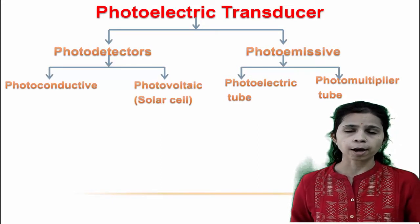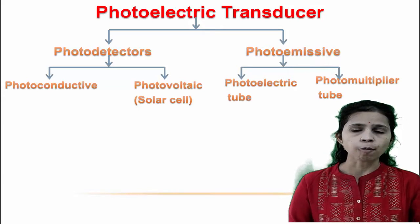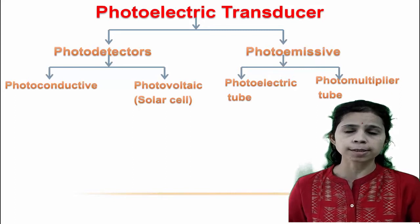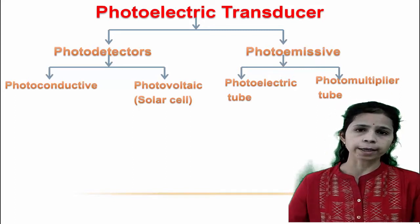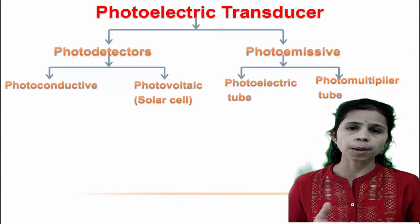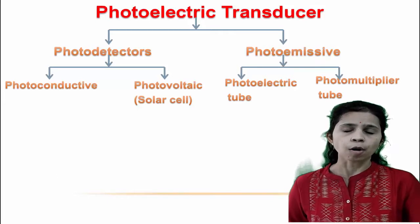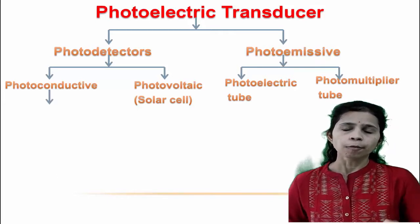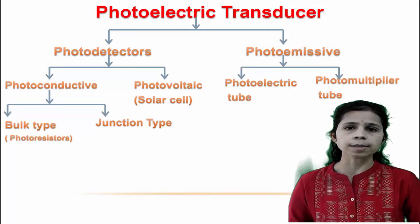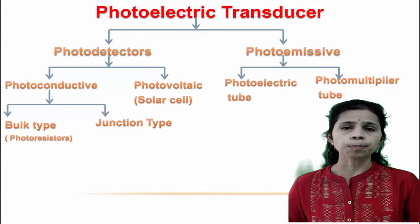Photo detectors detect light and are of two types: photoconductive devices and photovoltaic devices. Photovoltaic devices produce voltage due to photons — a familiar example is the solar cell, which generates electric voltage when sunlight falls on it. In photoconductive devices, the resistance of the material decreases when exposed to light radiation, meaning their conductance or current increases when exposed to radiation. Photoconductive devices can be of two types: bulk type and junction type.